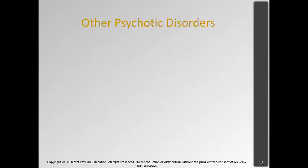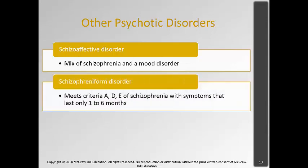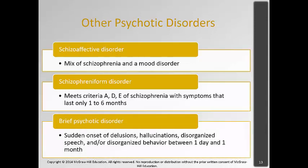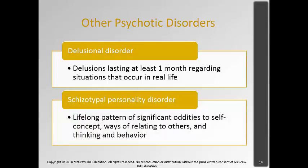Other types of psychotic disorders include: schizoaffective disorder, a mix of schizophrenia and a mood disorder like depression; schizophreniform disorder, which meets criteria A, D, and E of schizophrenia but with symptoms lasting only one to six months; brief psychotic disorder, with sudden onset of delusions, hallucinations, or disorganized speech or behavior lasting between one day and one month; delusional disorder, where only delusions are present for one month, usually regarding a real-life situation that becomes delusional; and schizotypal personality disorder, a lifelong pattern of significant oddities to self-concept, ways of relating to others, and behavior — those weird, reclusive people who don't meet full criteria for schizophrenia but show many oddities.